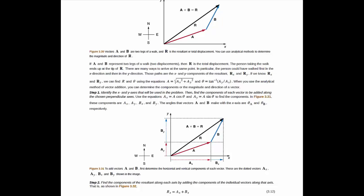If I give you two vectors, say Ax is three meters and Ay is five meters, and Bx is two meters and By is minus one meter.